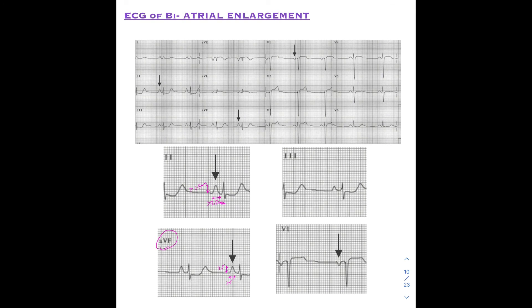In lead 3, the P wave appears normal — but that is fine, because the criteria are fulfilled by leads 2, aVF, and V1. In lead V1, the inverted P wave is almost 1 mm or more in both depth and duration, which is abnormal — normally it should be less than 1 mm. Together these findings confirm biatrial enlargement.